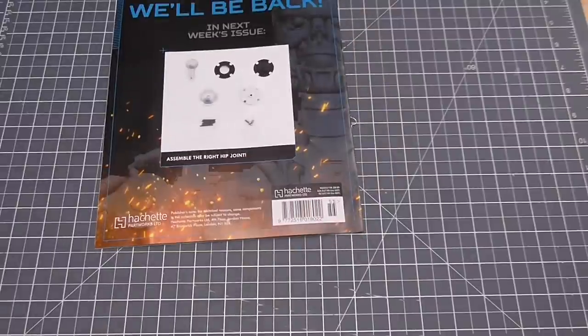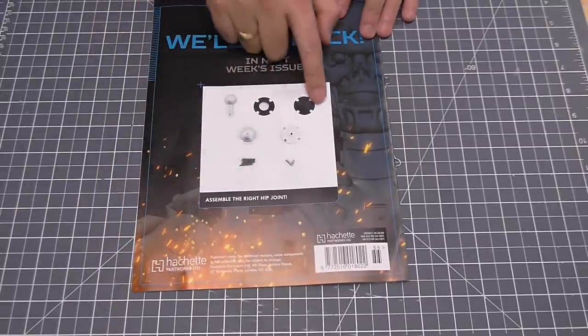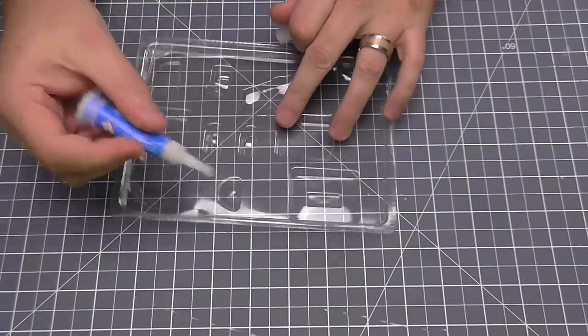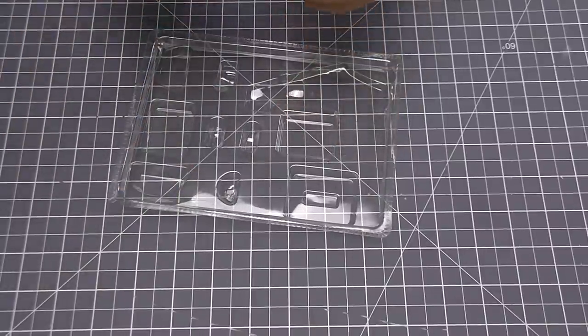That's all we've got to do in this issue. In the next issue we're going to be assembling the right hip joint. So without further ado let's get cracking. First thing I'm going to do I'm just going to put some glue just into this tray here.